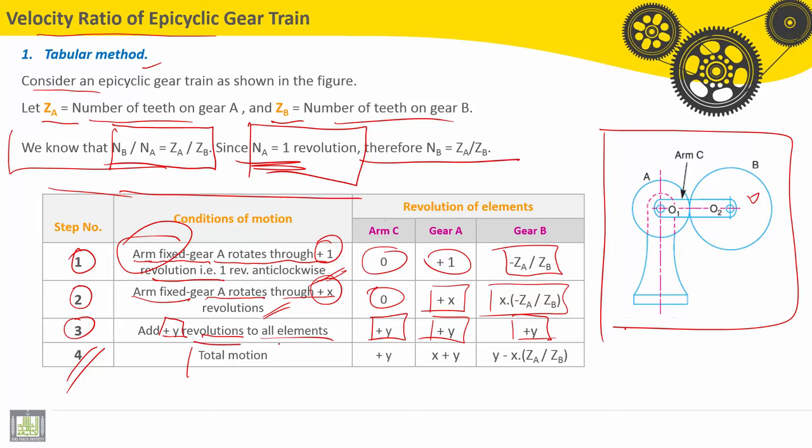Last step, we'll make the total motion. So here we have the sum: plus Y for the arm, this is NC. X plus Y, this is NA. And this is NB: Y minus X multiplied by ZA divided by ZB.